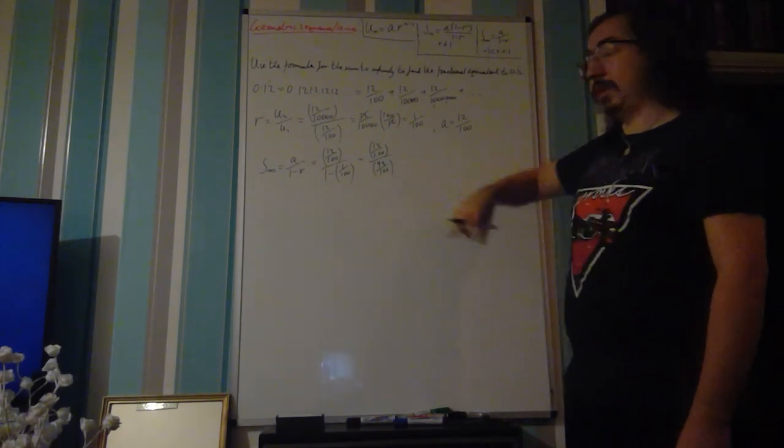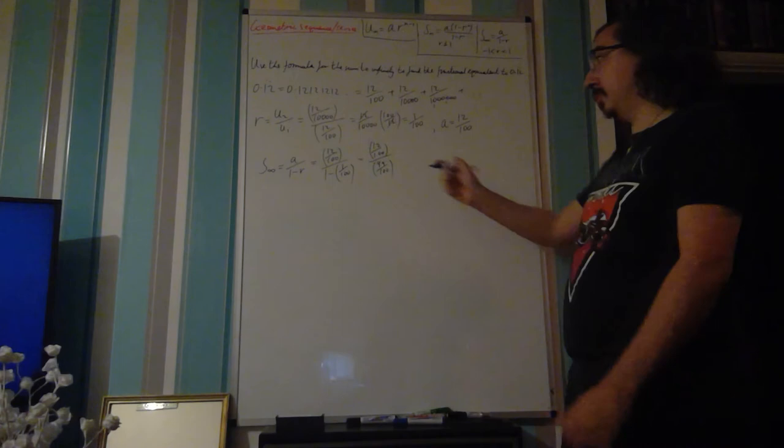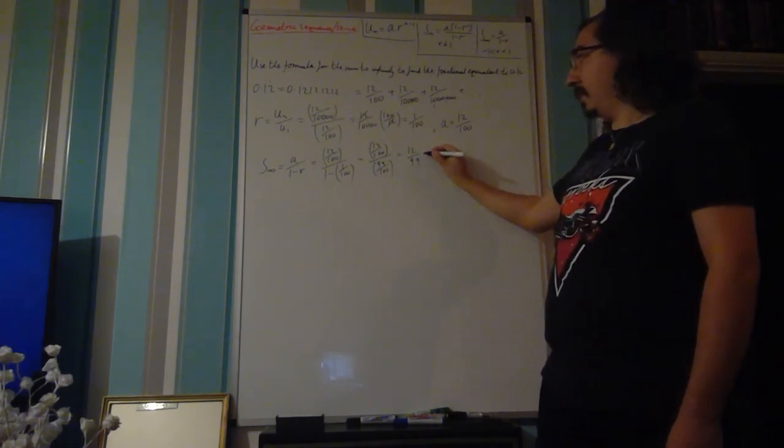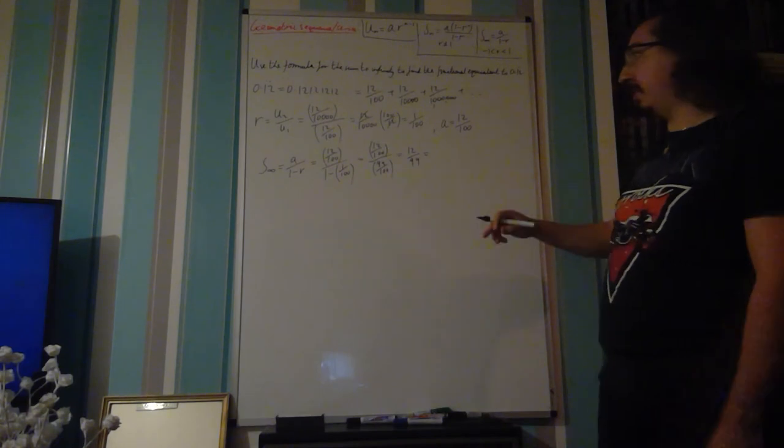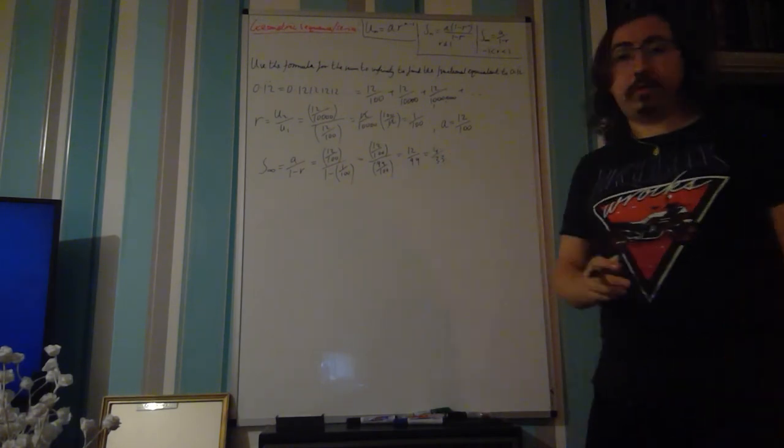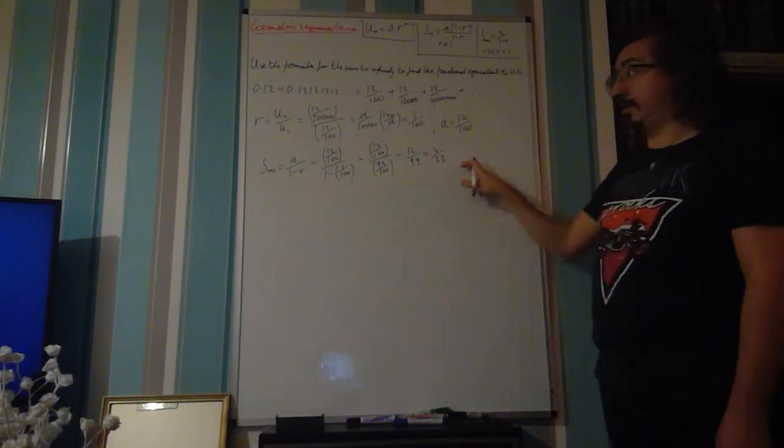Again it's a division of the fraction so it flips and becomes a multiplication. That leaves you with 12 over 99. If you divide both of those by 3, you get 4 over 33 and that's in its simplest form.